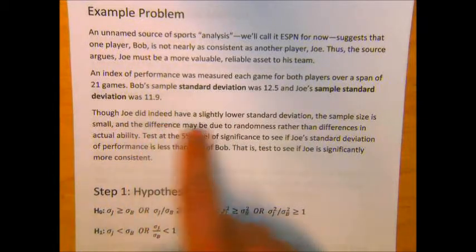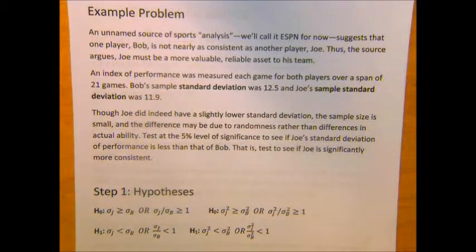Though Joe did indeed have a slightly lower standard deviation, the sample size is small and the difference may be due to randomness rather than differences in actual ability. This is what a hypothesis test is for, to protect us against coming to conclusions too quickly on small sample sizes. Test at the 5% level of significance to see if Joe's standard deviation is less than Bob's.